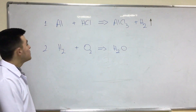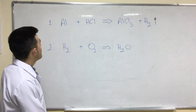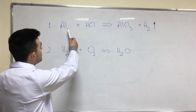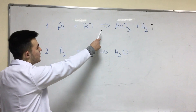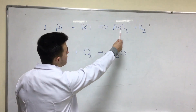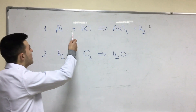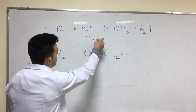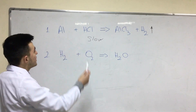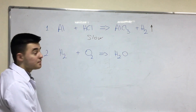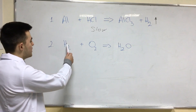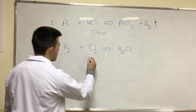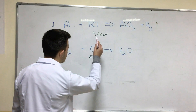These are the two reactions that are going to happen in our experiment. The first one is when aluminium reacts with hydrochloric acid to produce hydrogen. This reaction is slow because aluminium protects itself by its oxide. The second reaction is between hydrogen and oxygen, which produces water, and this reaction is faster than the first one.